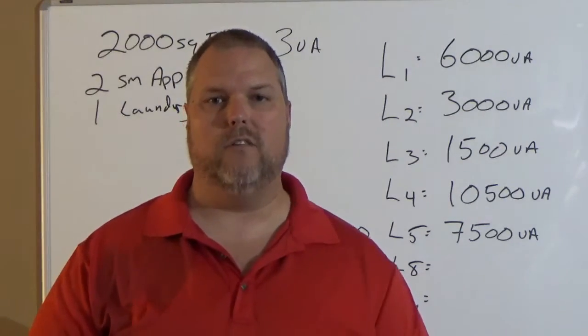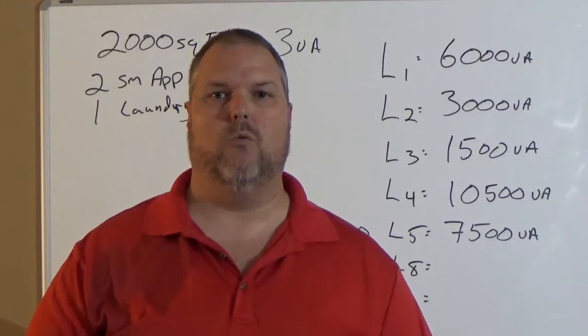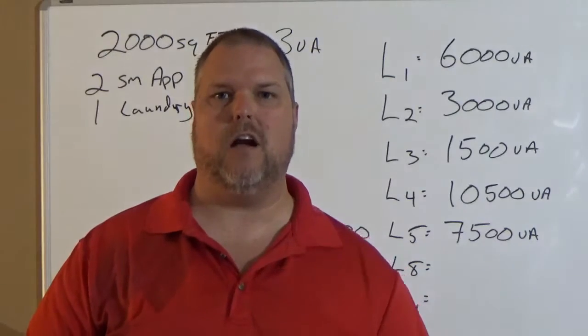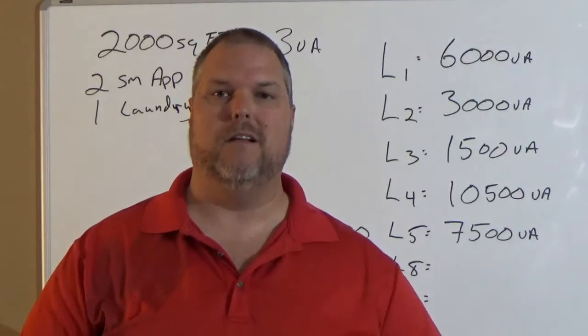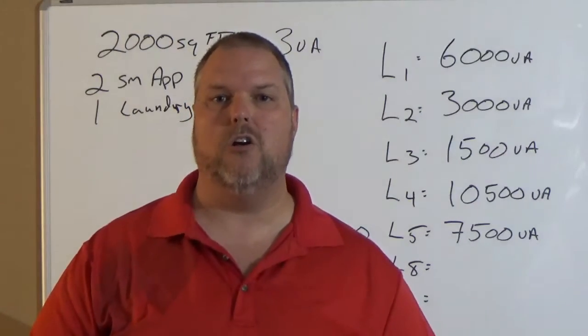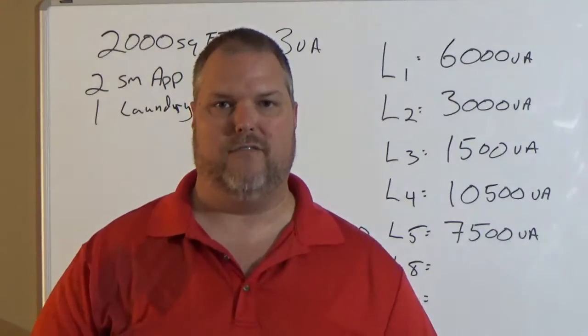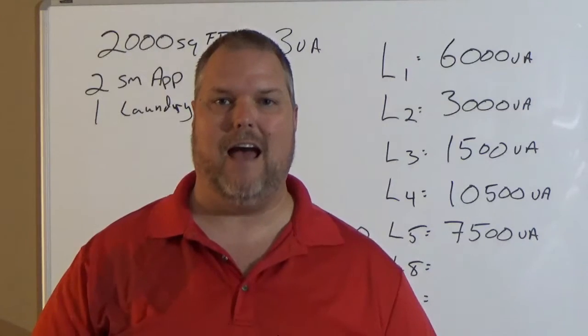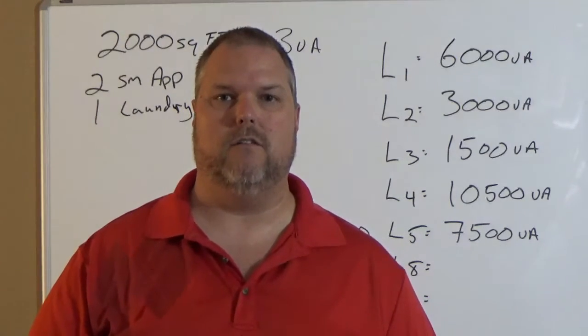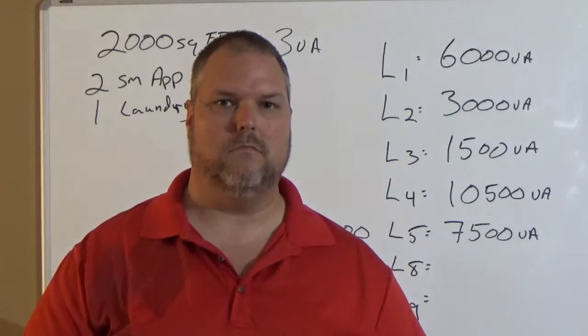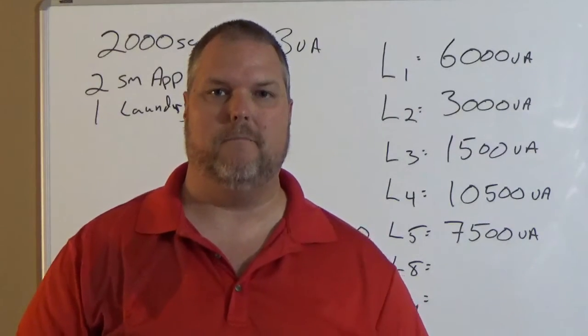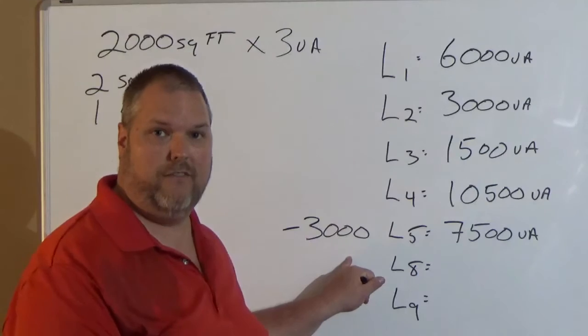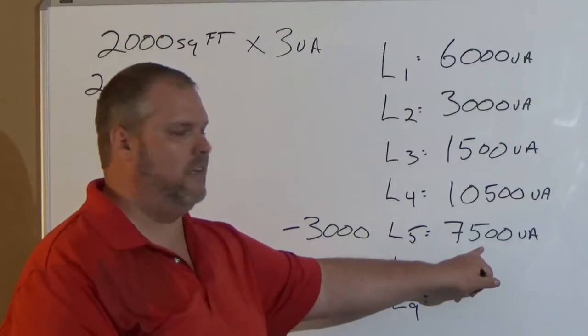The code book states that the first 3,000 out of 120,000, we take at 100%. What it doesn't state is we only have 117,000 left. So what do we do? What if we had 120,000? Well, I'm going to tell you this. If I had 120,000 after I took out my 3,000, which means I would have started with 123,000, I'm going to take my 3,000 out as 100%. I'm only going to go to 117,000 and multiply that by 35%. My 3,000 remainder would be multiplied by 25% and then I would have to add those three numbers together to get my general lighting load. So little side note, keep it in mind.